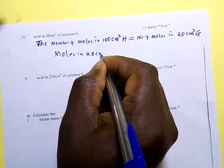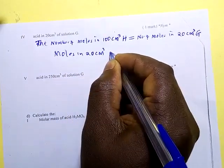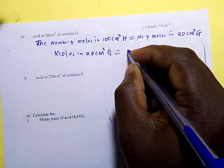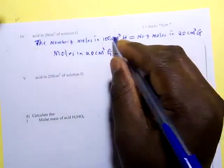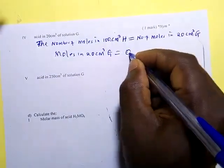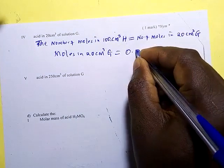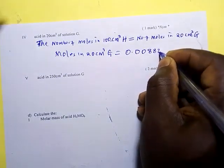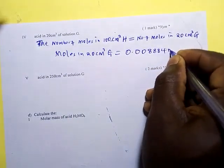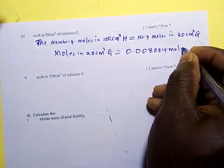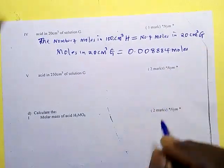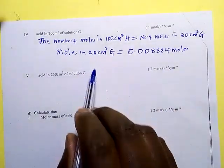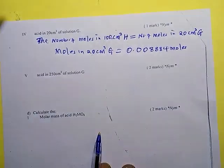Therefore, the moles in 20 centimeters cubed of solution G equals 0.008884 moles — this is the number of moles in 20 centimeters cubed of solution G.